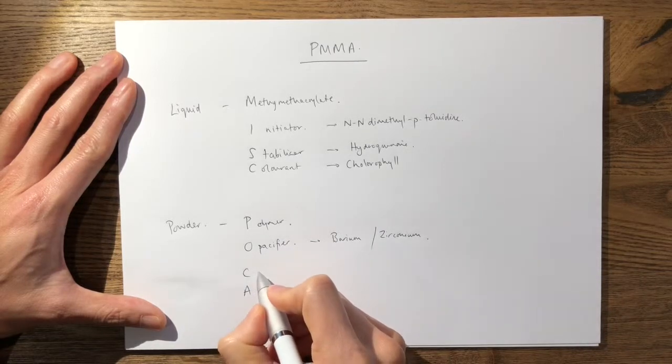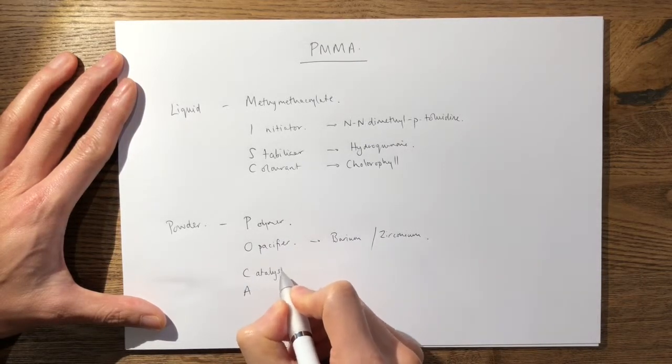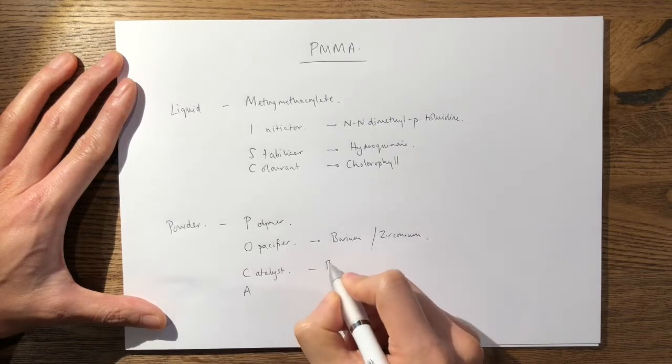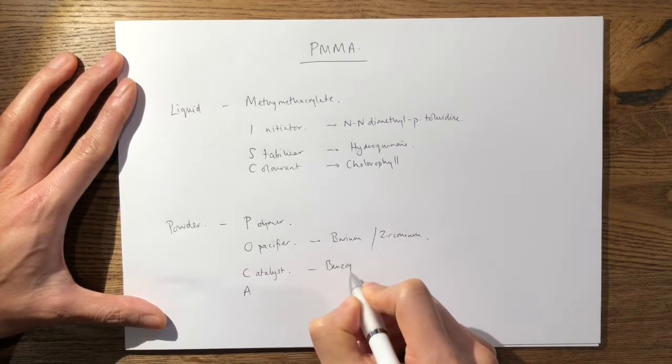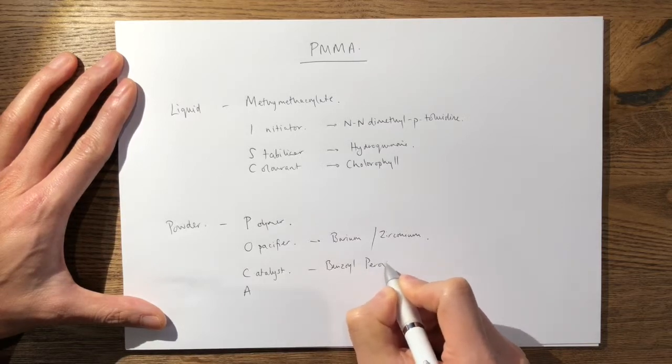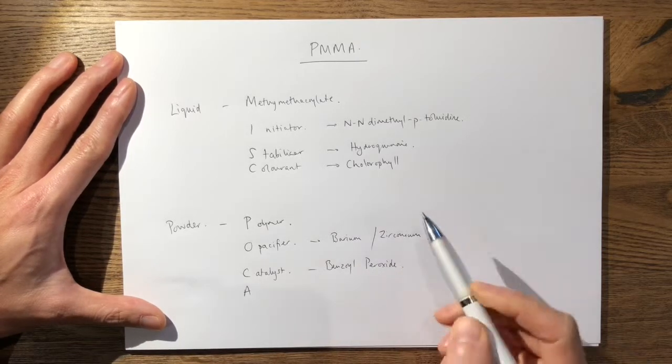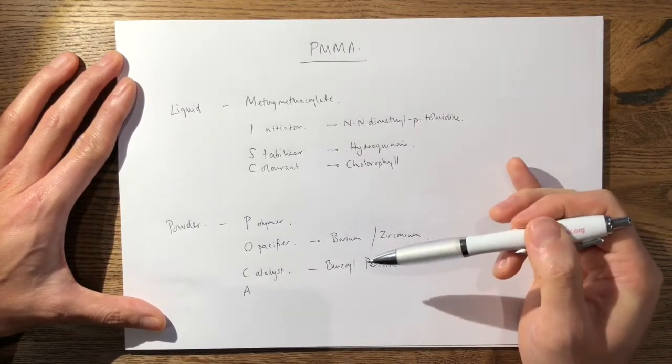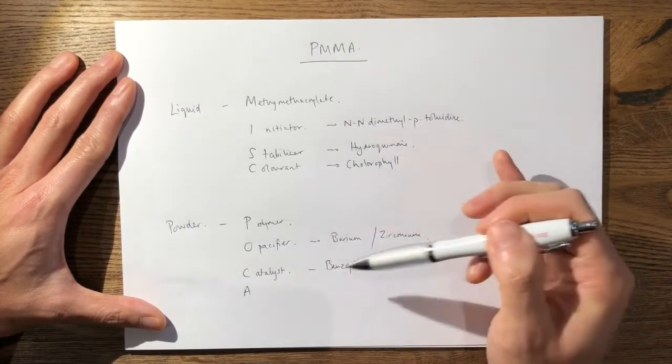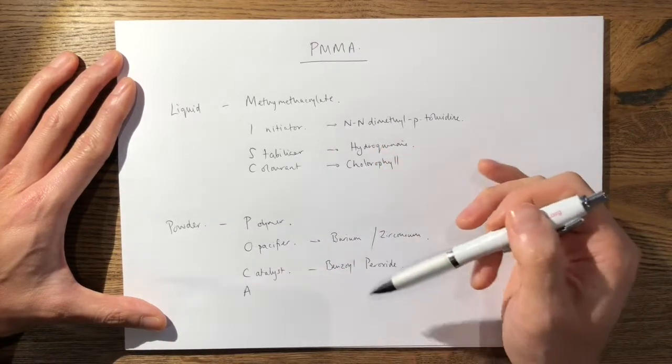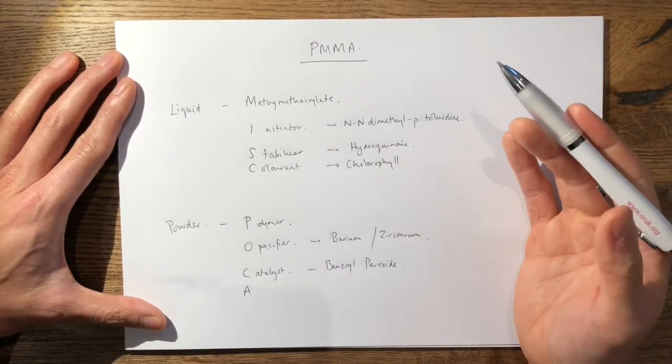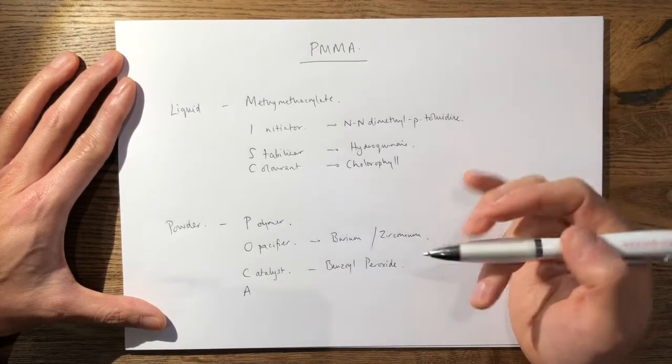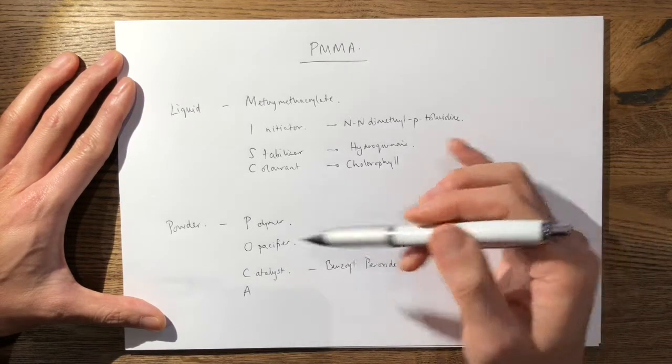The C stands for a catalyst, and in this case it's benzoyl peroxide. In some books it mentions that the catalyst is actually in the liquid, but it's more commonly in the powder. For example, in Palacos, which is a brand name of cement that we commonly use, the benzoyl peroxide is actually in the powder.